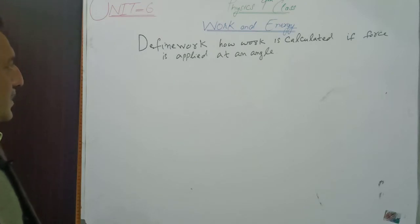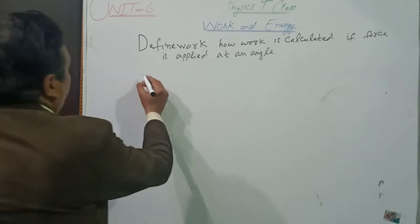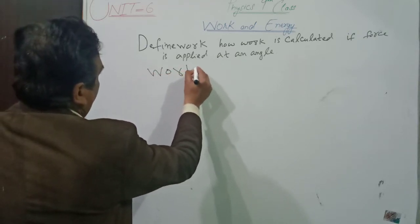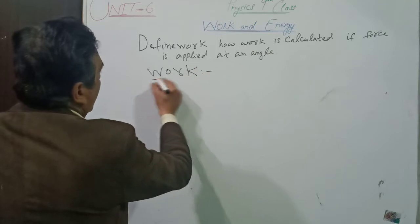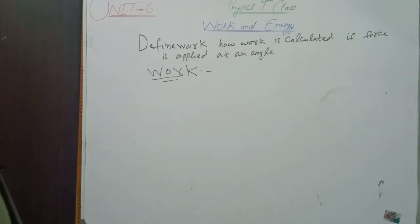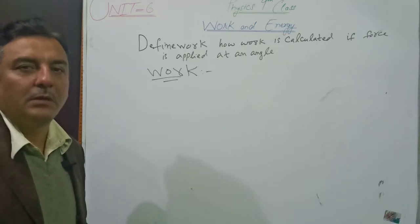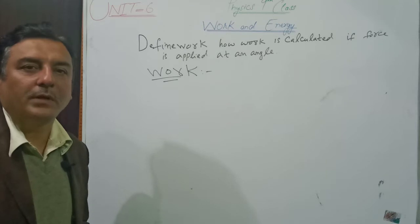Today our topic is work and how work is calculated if force is applied at an angle. What is work in physics? First we define the work. When force is applied on a body and the body moves in the direction of force, then we say that work is done.